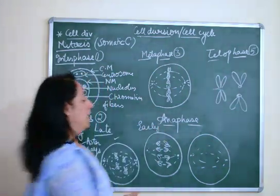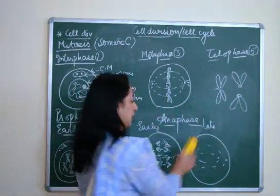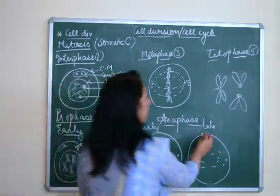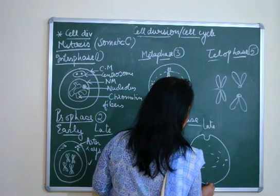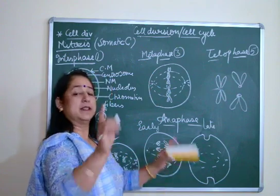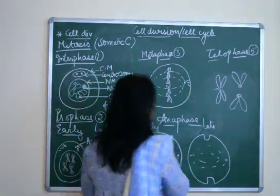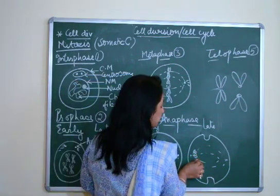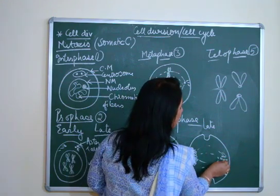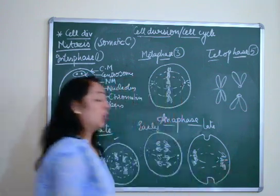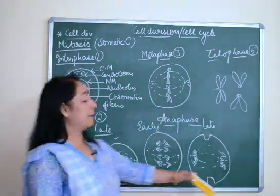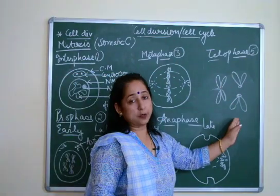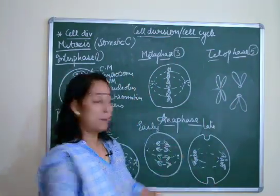In late anaphase, the cell membrane is intact but a furrow formation begins. The centrioles and spindle fibers remain, and the chromatids move to the poles — they align on the spindle fibers and move toward the poles. So in summary: chromosomes are intact in metaphase, they split into chromatids in anaphase, and then move to the poles.